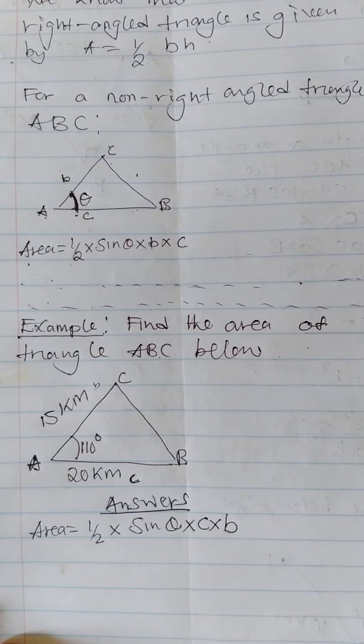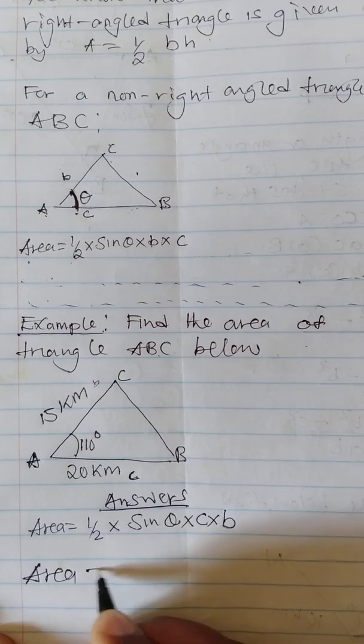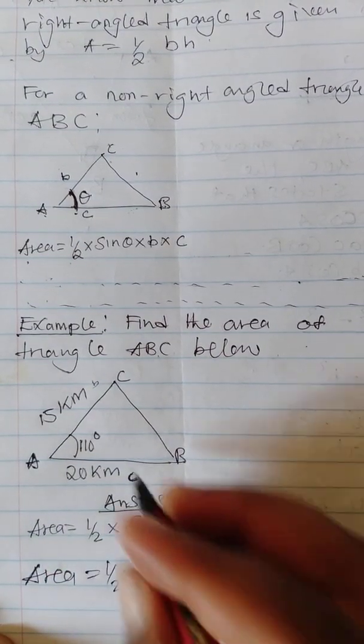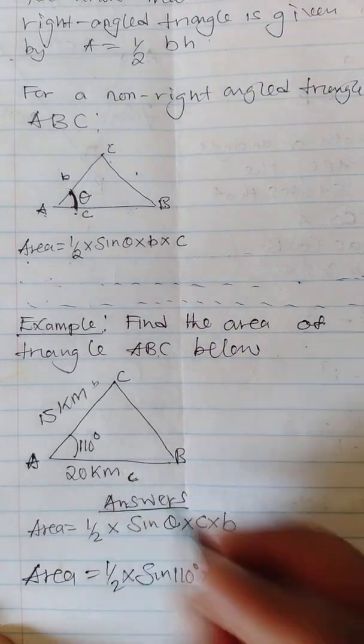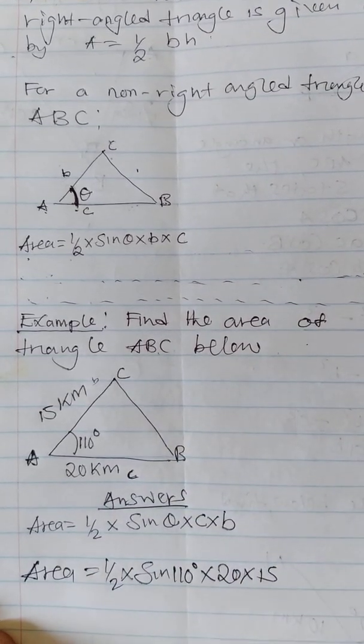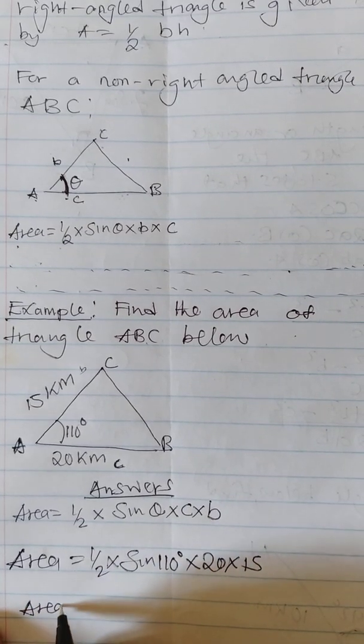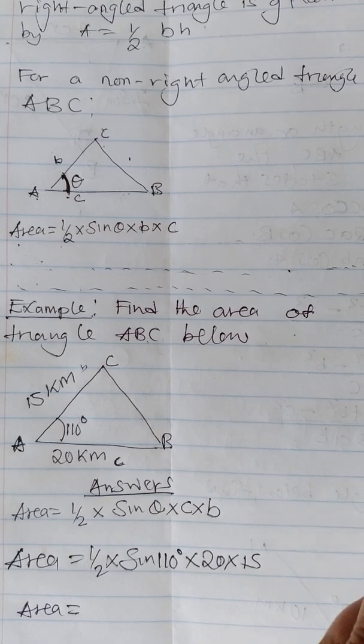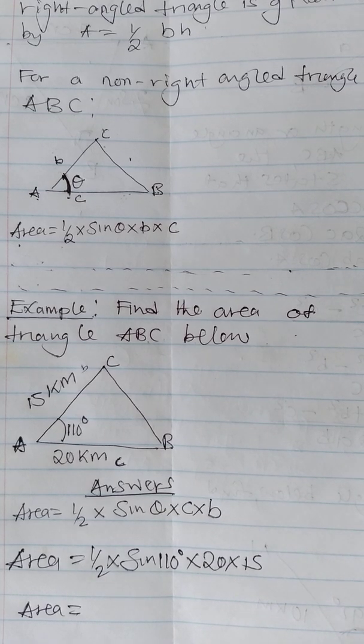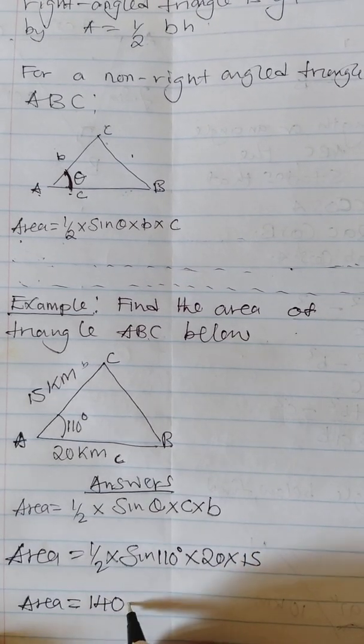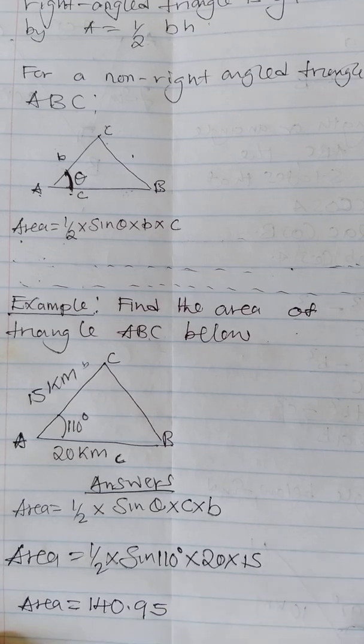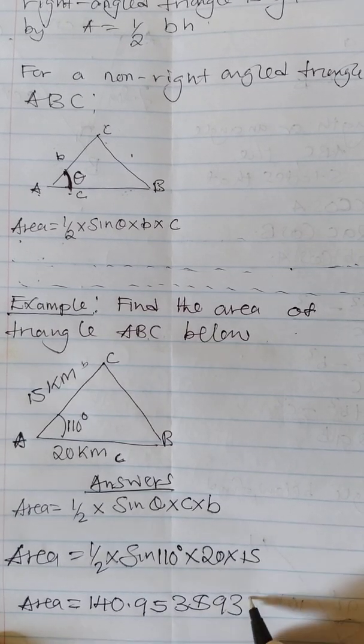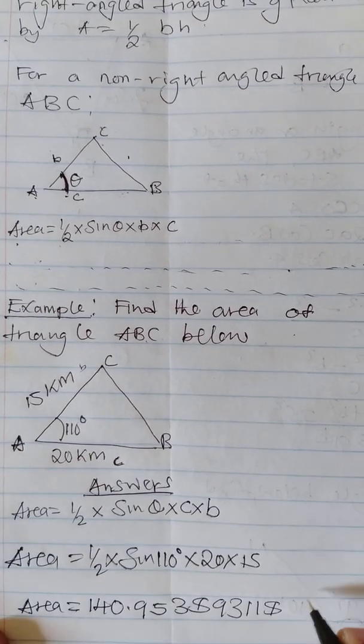What is the angle here? 110 degrees. You multiply by 20, then multiply by 15. When we multiply this, you need to use a calculator. When you find that on calculator, you get 140.953893111 square kilometers.